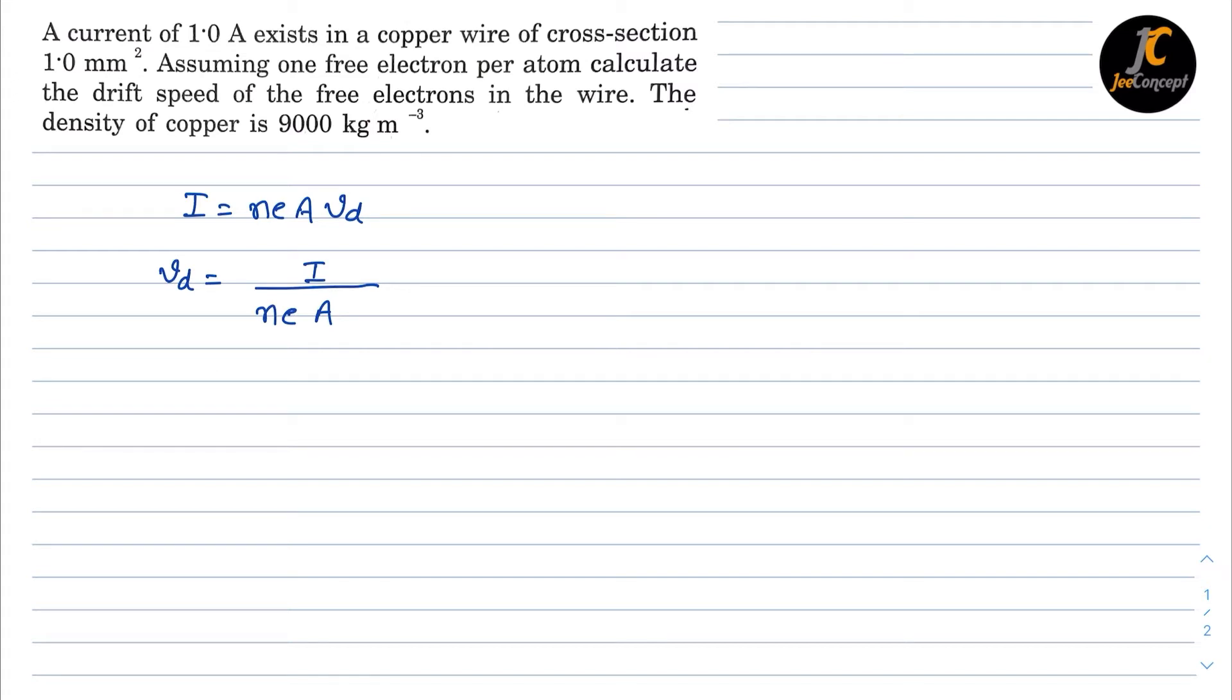Now the density of copper is given as 9000 kg per cubic meter and the molecular mass of copper is 63.54 gram per mole.